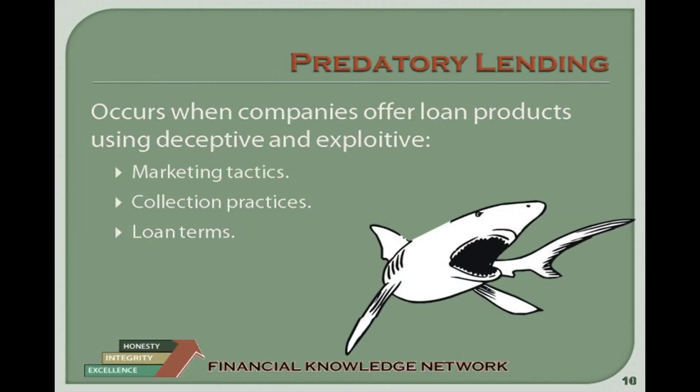Predatory Lending: Following are several indicators of possible predatory payday lending practices. 1) The company advertises terms that it does not actually offer. 2) You are not given disclosures listing terms such as the finance charge and APR. 3) There is no cooling-off or waiting period between the time you repay a payday loan and the time you are allowed to obtain another loan. 4) You can get a payday loan even if you currently owe payday loans to other companies at the same time. 5) You can obtain as many payday loans as you want each year. 6) You can get a payday loan to finance unpaid interest and fees. 7) The company threatens to prosecute you criminally for writing a bad check, even though it knew you had insufficient funds in your account and you paid a payday loan fee.